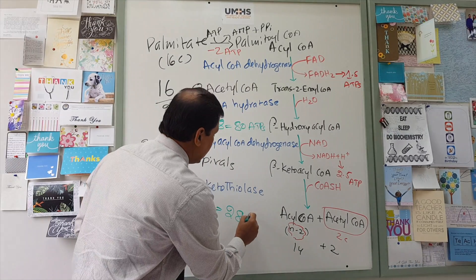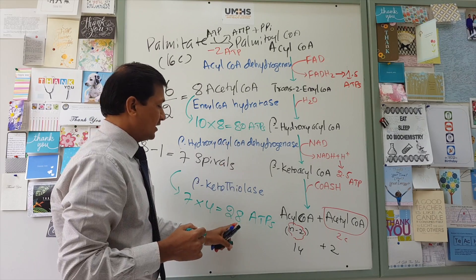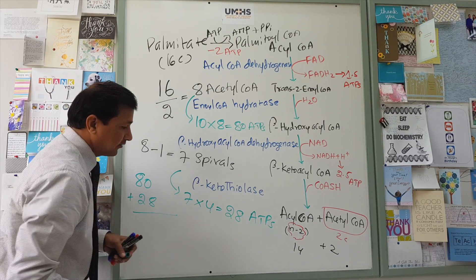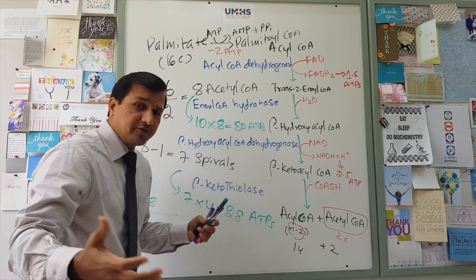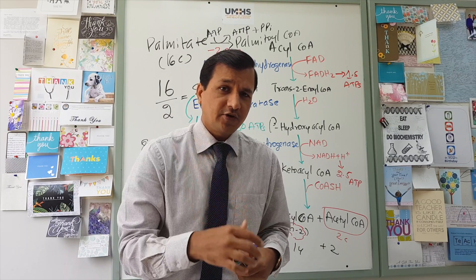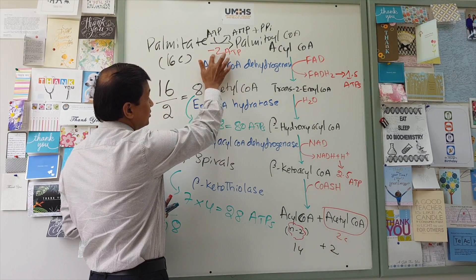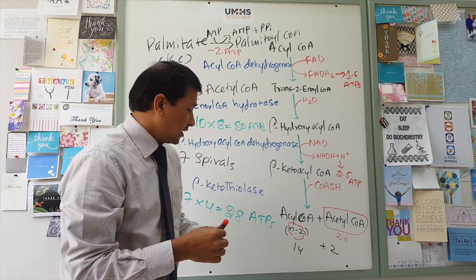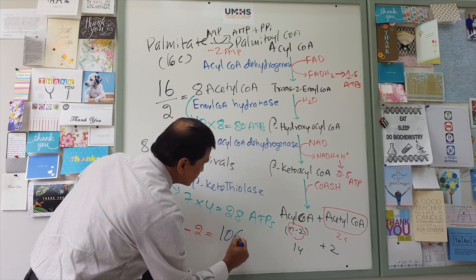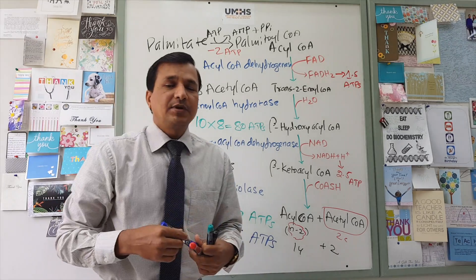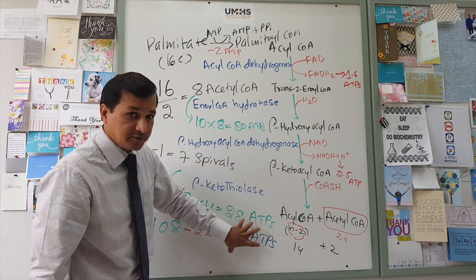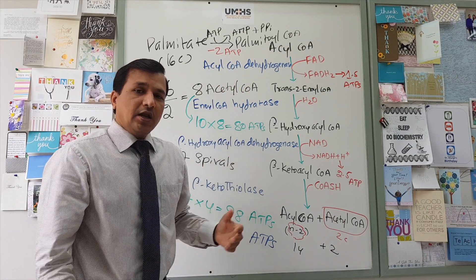In each spiral you get 4 ATPs, and with 7 spirals that gives 7 × 4 = 28 ATPs. Adding together: 80 ATPs from acetyl-CoA molecules plus 28 ATPs from the 7 spirals equals 108 ATPs. Don't forget to subtract the 2 ATPs consumed to activate palmitate into palmitoyl-CoA. So 108 − 2 = 106 ATPs net. This is the net number of ATPs from palmitoyl-CoA oxidation.